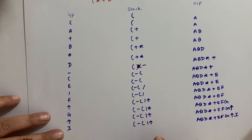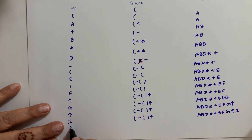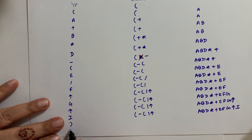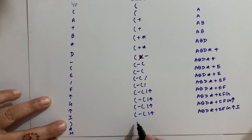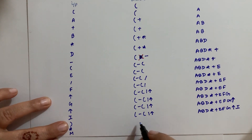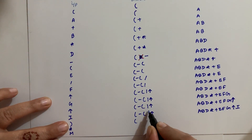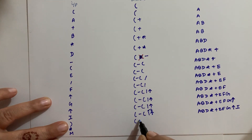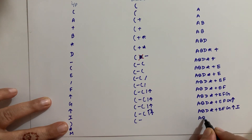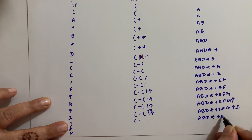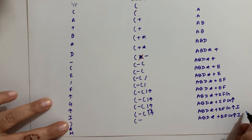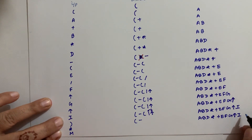After I, the next is a closing bracket. After the closing bracket there is multiplication, and then M. So M goes to the output. When the closing bracket comes, both operators pop out. The output so far becomes: A, B, D, into, plus, E, F, G, raise to the power, I, raise to the power, and division. Then multiplication comes — it goes into the stack — and M goes to output.